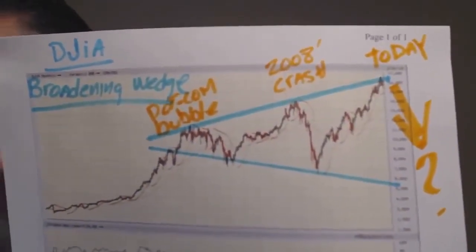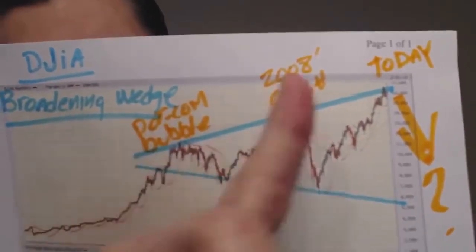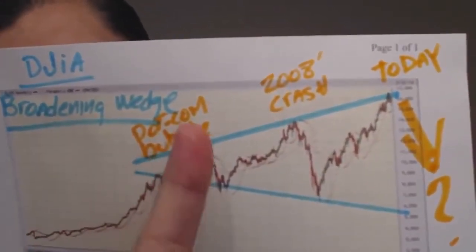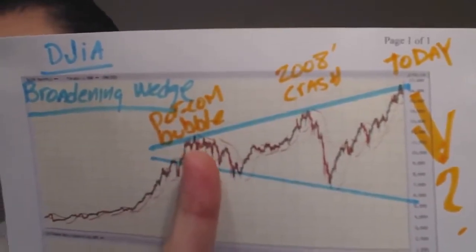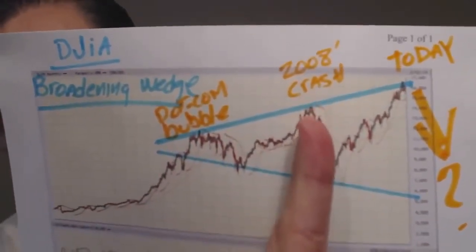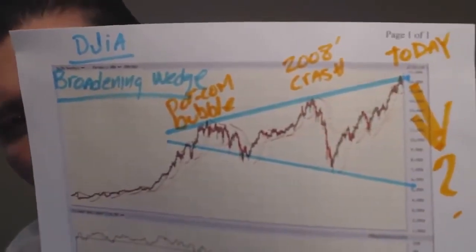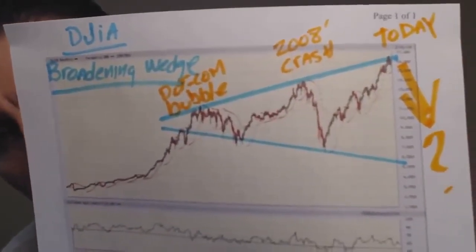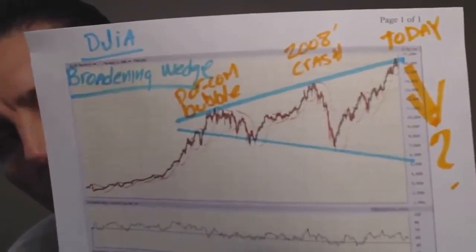This is the pattern — this broadening wedge here. This right here was the dot-com bubble. Right here is the 2008 crash. This is where we are today. I put a question mark here, but if you look at this chart, gauging what is going on in the overall markets right now, gauging what the global picture looks like, and then back that up with the pattern we're seeing compared to the 1929 crash and today.